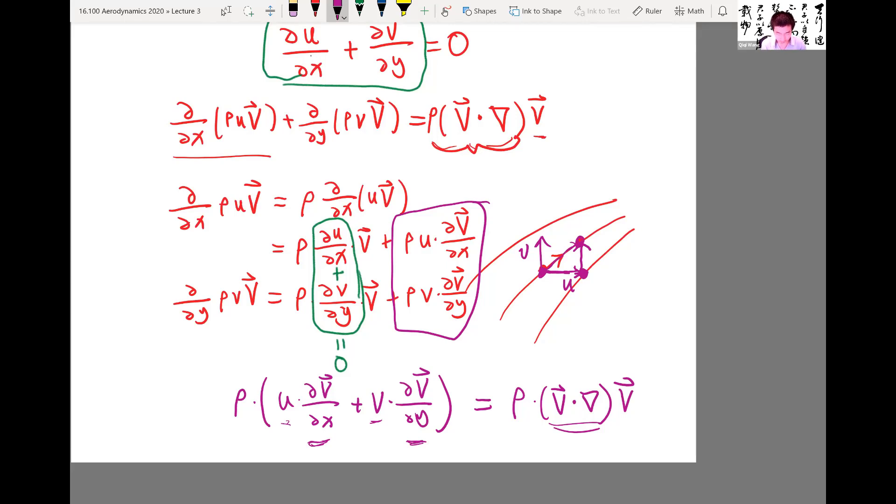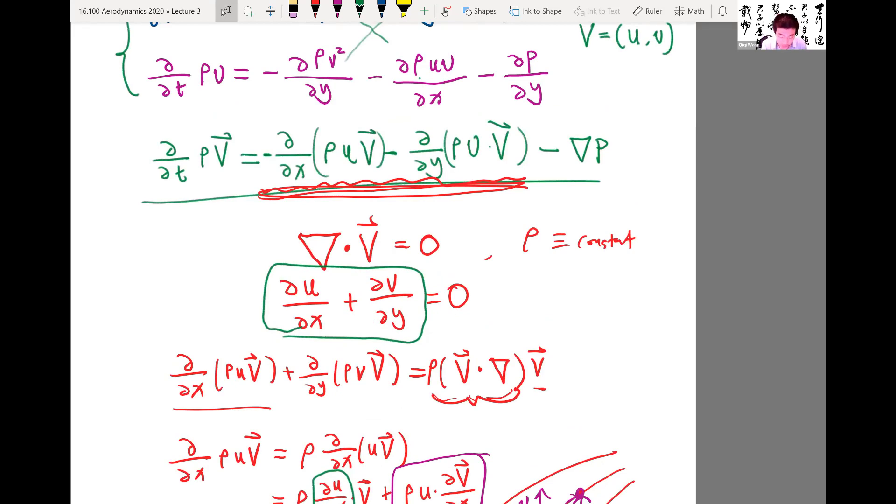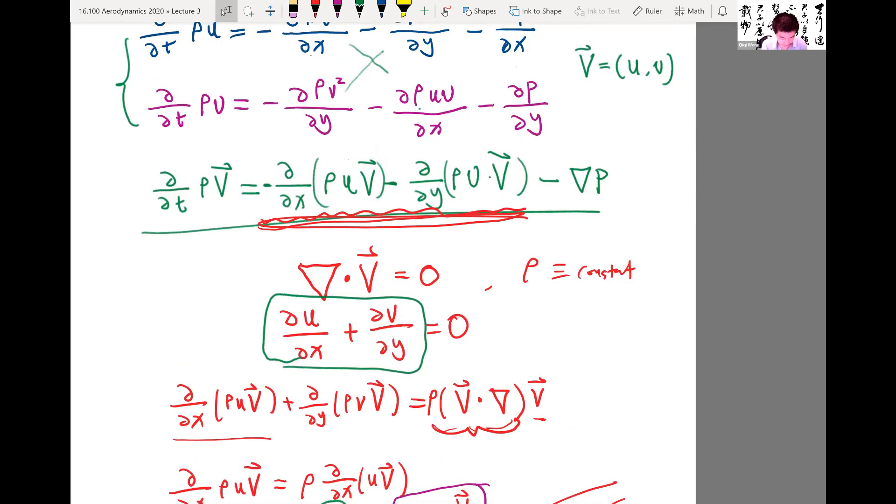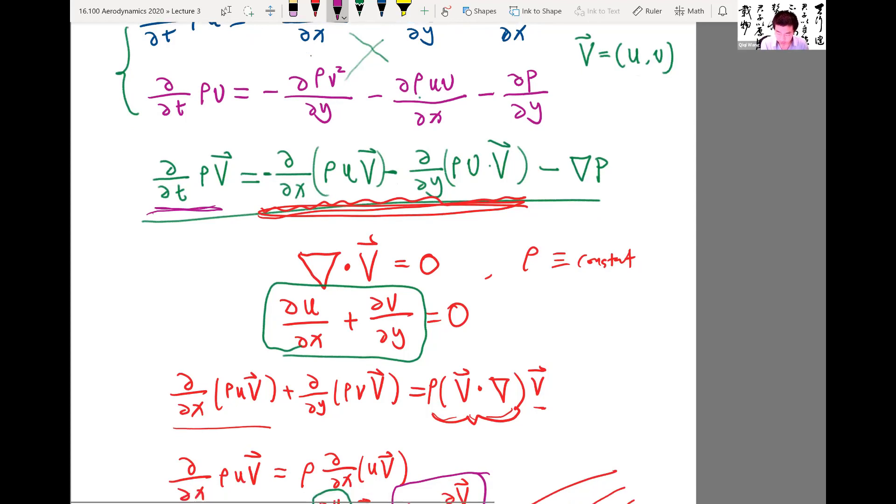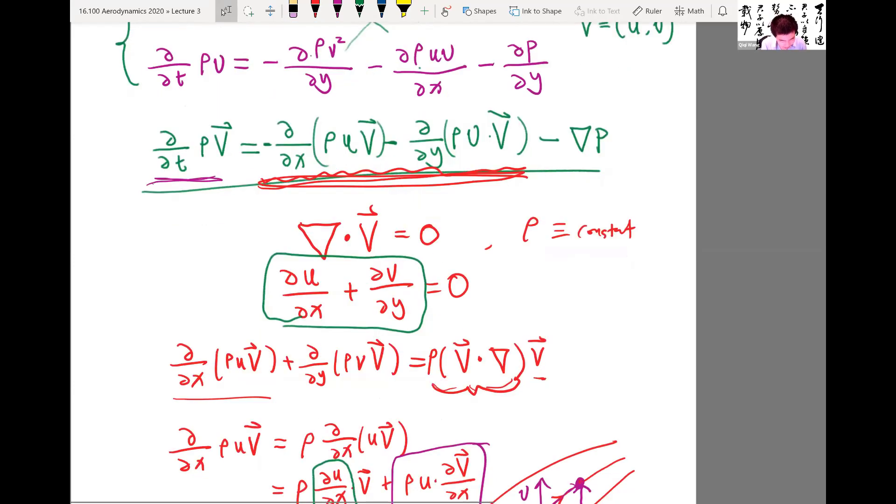All right, so this is essentially another form of the momentum conservation, right? The time derivative of momentum is equal to ρ times the directional derivative of velocity itself along the velocity direction, minus gradient of p, which is the pressure force.